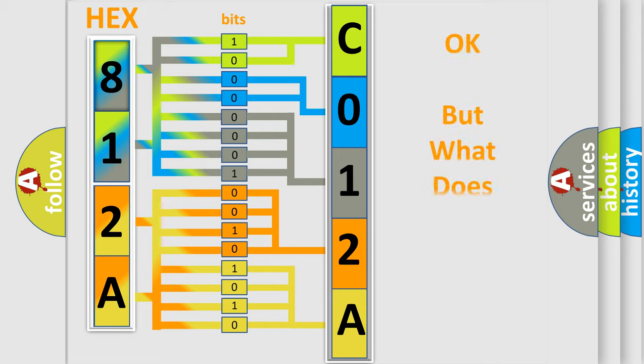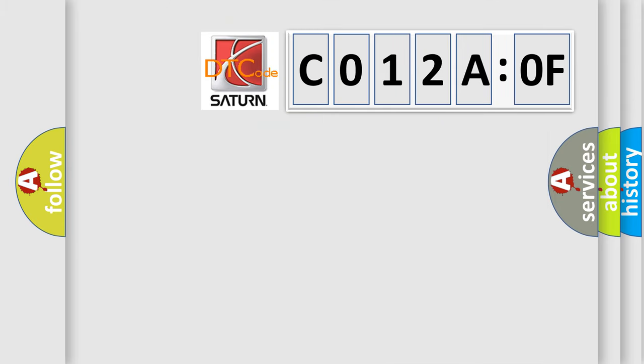The number itself does not make sense to us if we cannot assign information about what it actually expresses. So, what does the Diagnostic Trouble Code C012A:0F interpret specifically for Saturn car manufacturers?